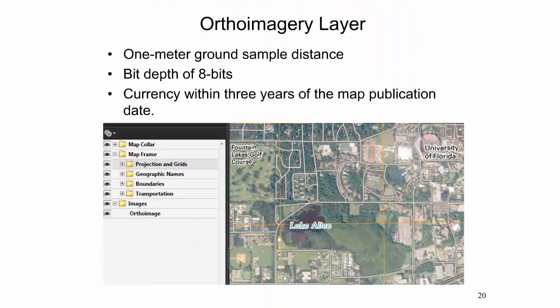An orthoimage is a required layer in every US Topo product. Orthoimagery at the 1:24,000 scale requires a 1-meter ground sample distance, a bit depth of 8 bits, and currency within 3 years of the map. Image sources with a finer ground sample distance and larger bit depth are resampled to balance digital file performance versus high-quality printing.